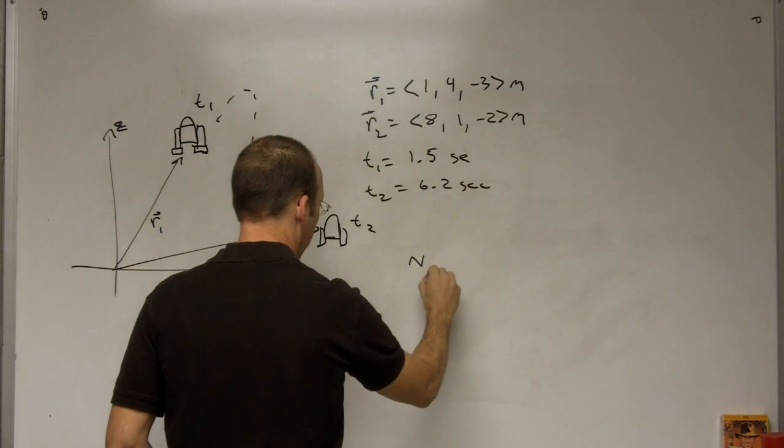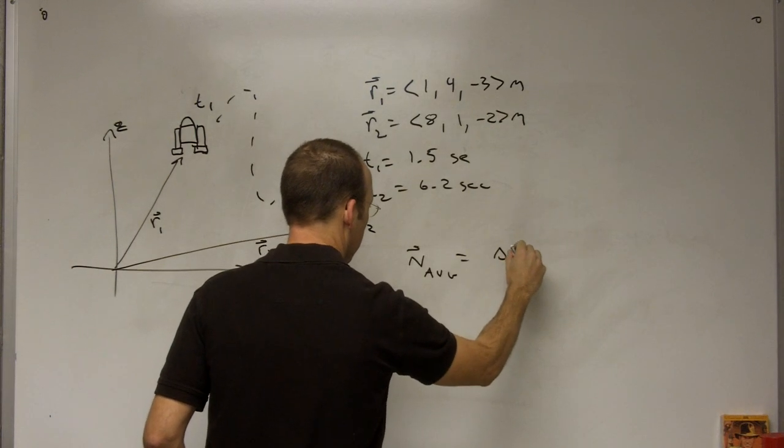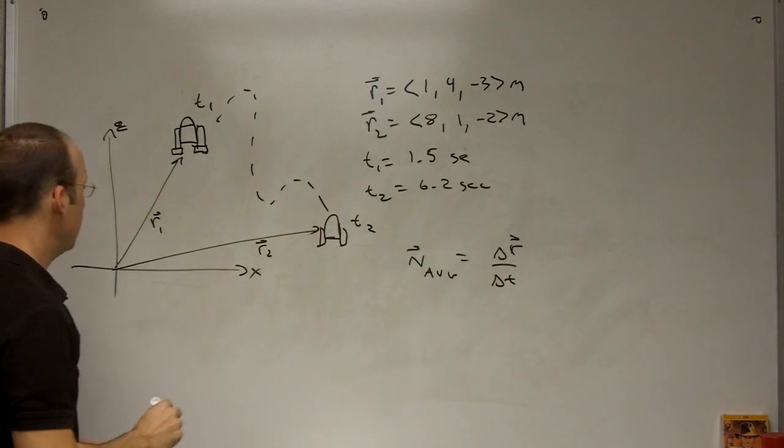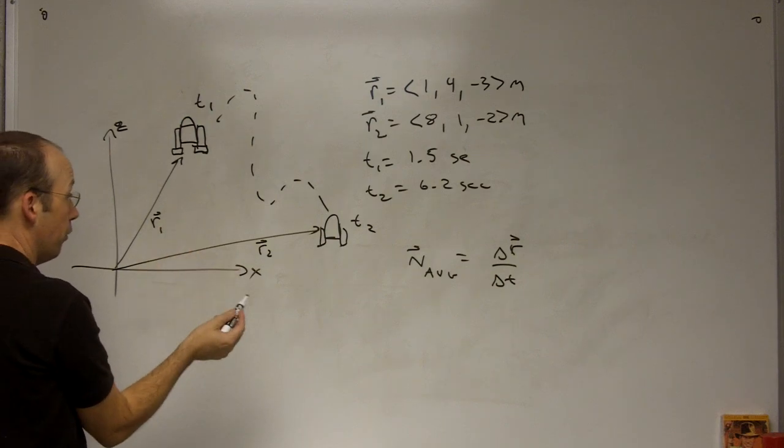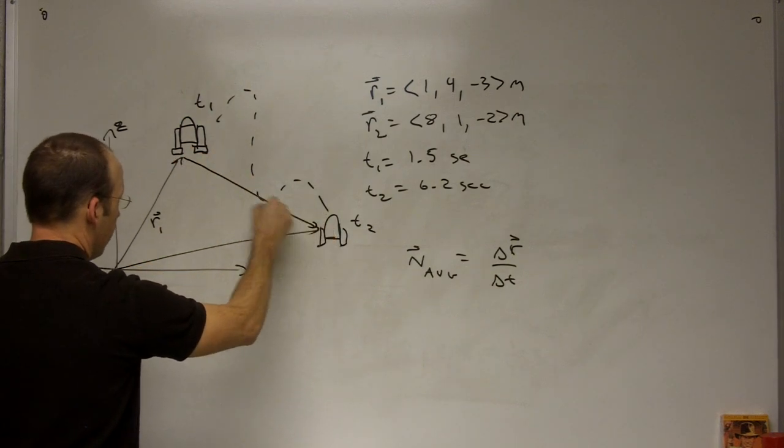So I can say V average, the definition of average velocity, change in position over change in time. That's it. So what was the change in position? Well, whenever you change in position, it's final minus initial. So it's going to be this vector, I'll call it delta R.